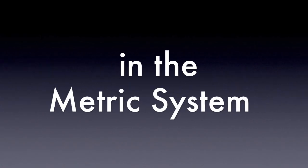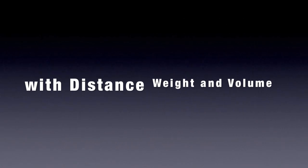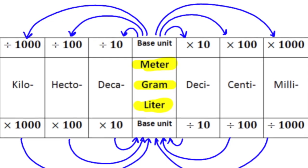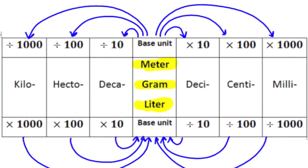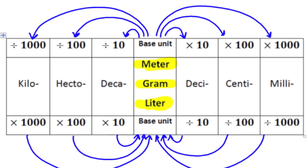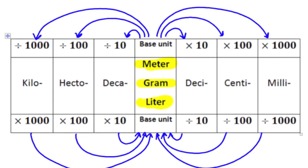That's biggest to smallest in the metric system, with distance and weight and volume. It's kilo, hecto, deca, deci, centi, milli — the end.